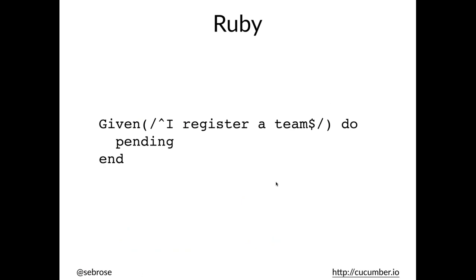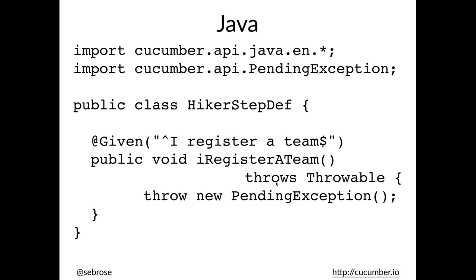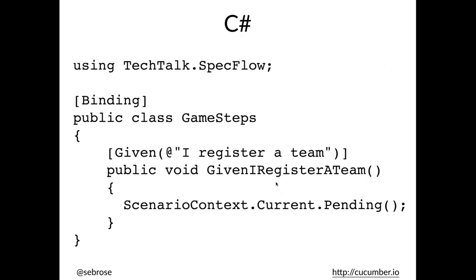Ruby, the original Cucumber implementation, has a very concise way of writing step definitions. Java is somewhat more verbose, and C# is also a little verbose. But essentially they all come to the same thing: there is a regular expression — in this case within double quotes, 'I register a team' — and Cucumber matches up the text within the step in the feature file with the regular expression in the step definition file.